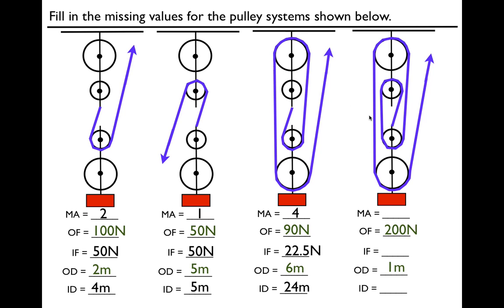Last one. Let's count: 1, 2, 3, 4, 5. Mechanical advantage: 5. We have five strings supporting a weight of 200 Newtons. That means each string is supporting 200 divided by 5 = 40 Newtons. We only want to raise it one meter, but we have to pull all five strings. In order to get the input distance, we multiply the output distance times the mechanical advantage, and that means the input distance is going to be five meters.